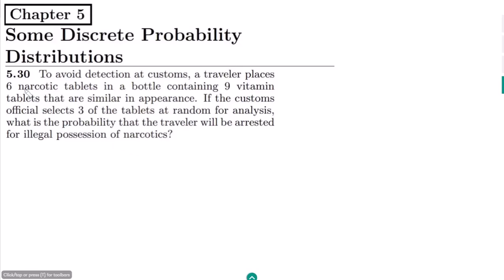Welcome back guys. This is question 5.30. The statement of this question is: to avoid detection at customs, a traveler places six narcotic tablets in a bottle containing nine vitamin tablets that are similar in appearance. If the customs officials select three of the tablets at random for analysis, what is the probability that the traveler will be arrested for illegal possession of narcotics?